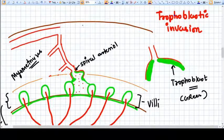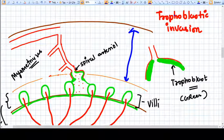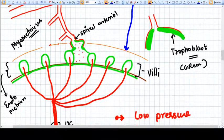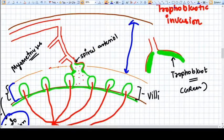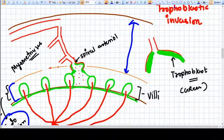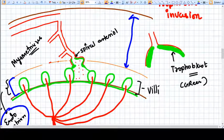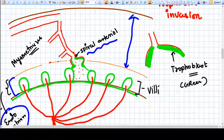See, this part I have shown here is the myometrium of the uterus, this part here is the endometrium. So the blood supply of the uterus is the uterine artery, and the terminal branch of the arteriole is the spiral arteriole that supplies the endometrium.